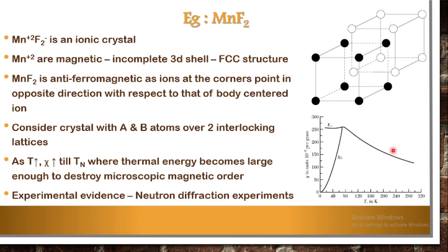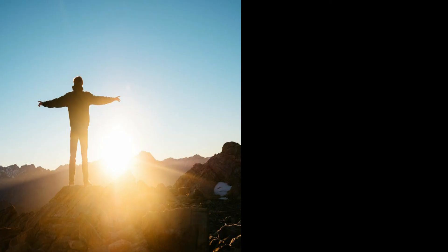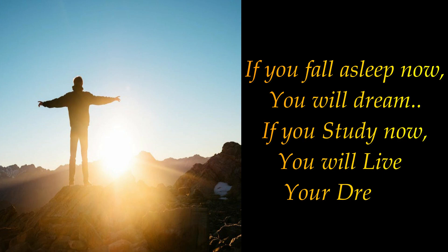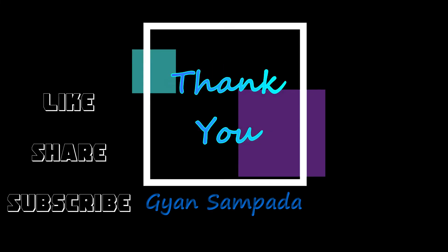These are the details about the characteristic properties of antiferromagnetic material — starting from the nature of spin, the characteristic susceptibility property, the history, and the two sub-lattice model which is experimentally accepted. In our next class we will deal with the two sub-lattice model, which is the molecular field theory of antiferromagnetic material. See you in the next class for more details on antiferromagnetism. Study well, stay tuned, and thank you for watching.